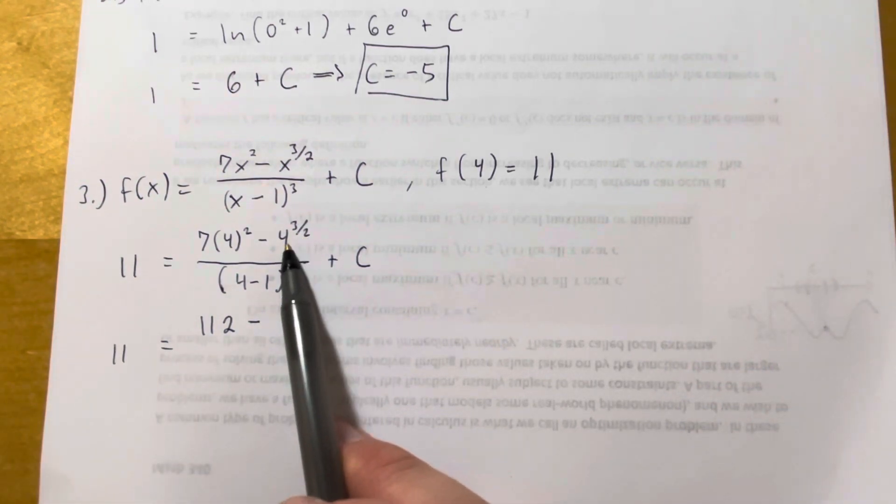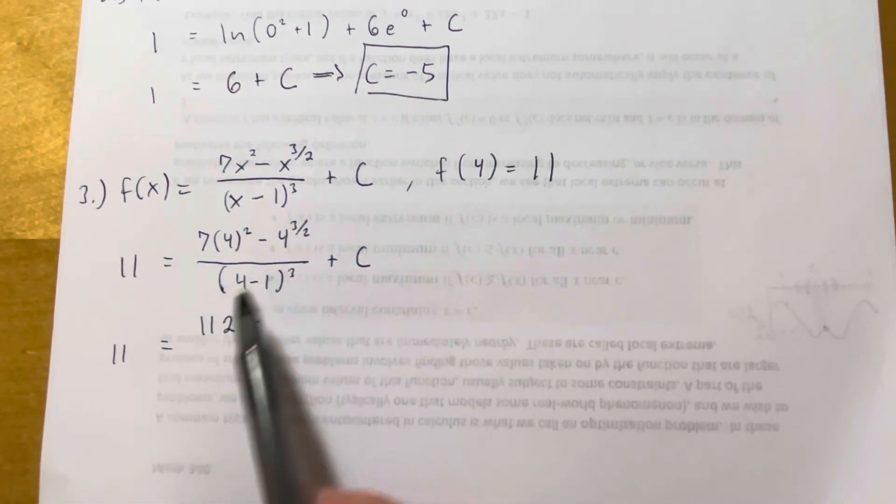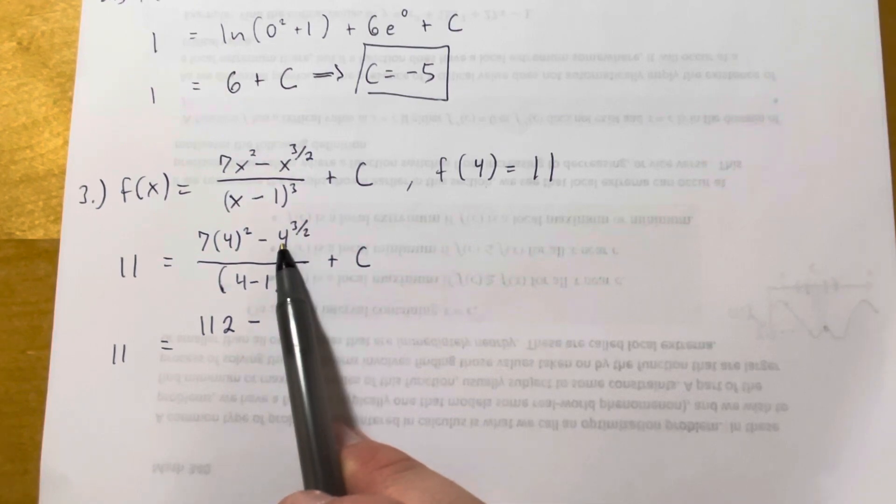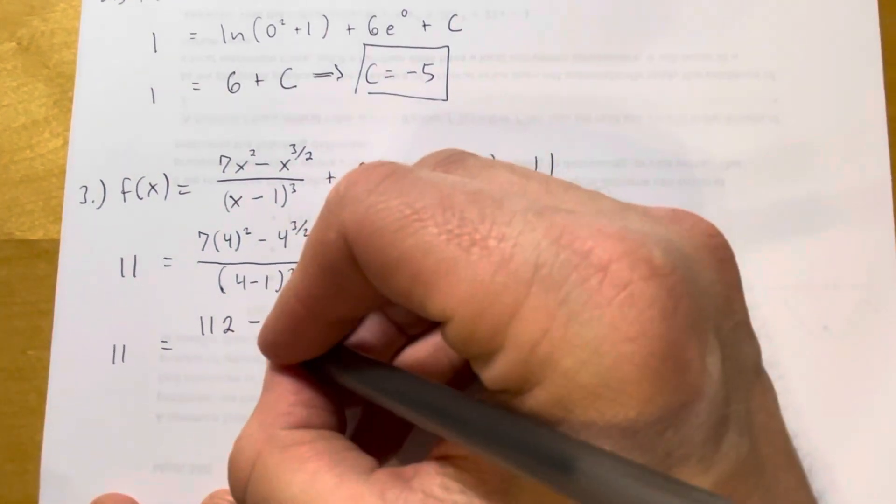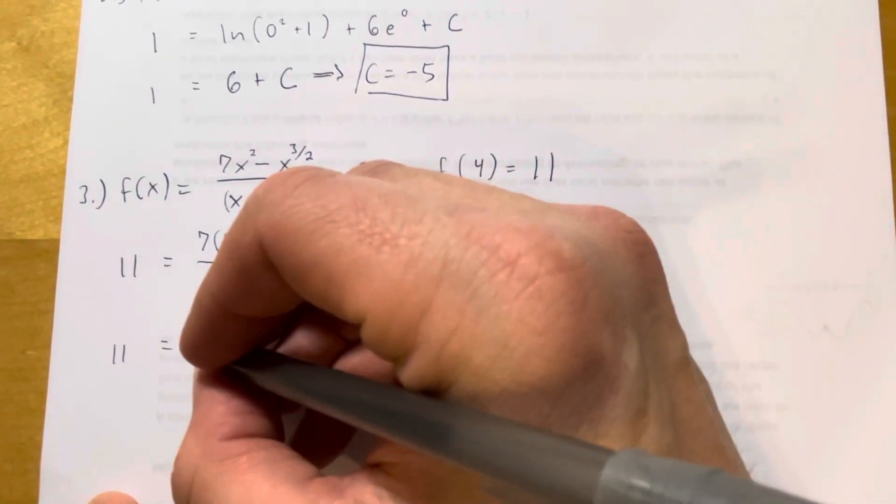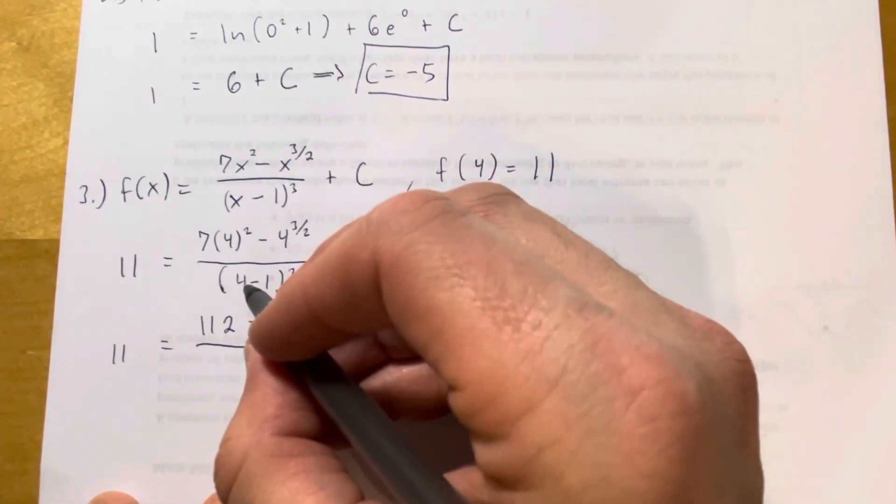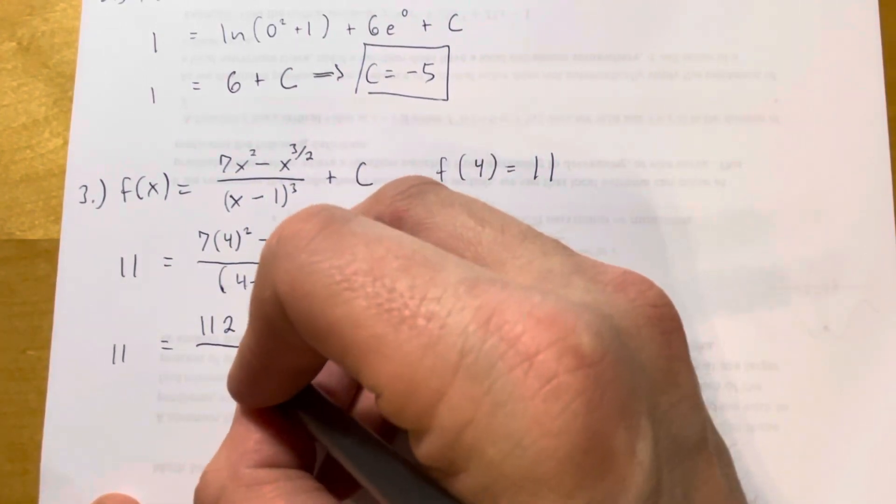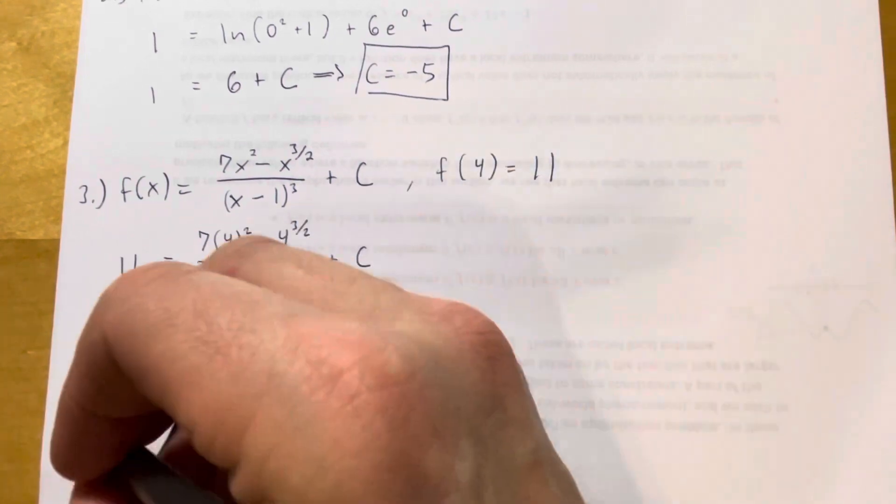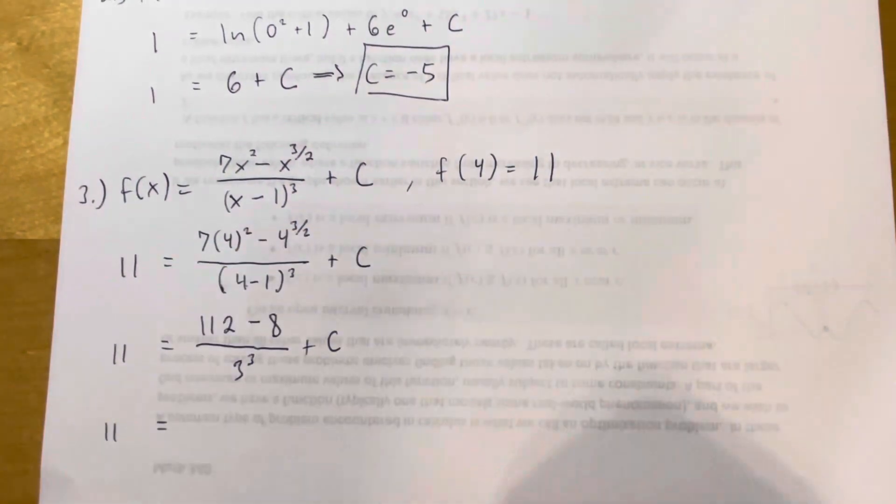Here, I've got 4 to the 3 halves power. So remember, this is the square root of 4, and then I take that and cube it. The square root of 4 is 2, and 2 cubed is 8. So that becomes 112 minus 8. Down here, 4 minus 1 is 3, so I'm cubing that plus C there.